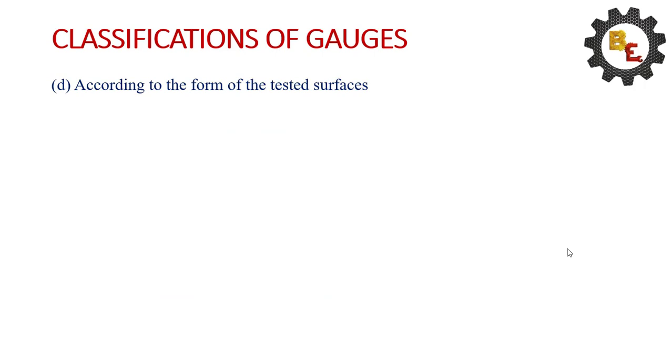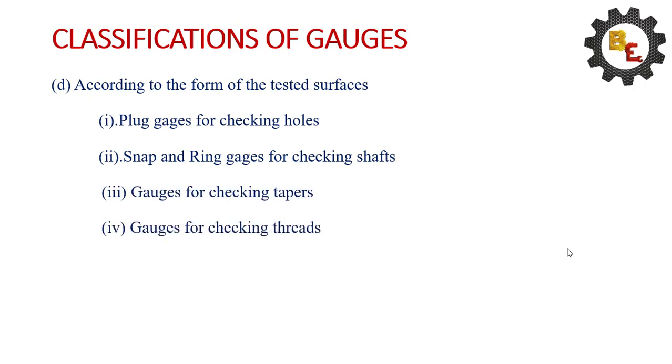According to the forms of tested surfaces: plug gauges for checking the holes, snap and ring gauges for checking the shaft, gauges for checking the taper, gauges for checking the thread, gauges for checking the forms.